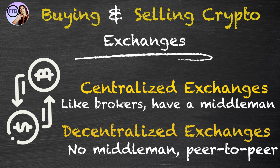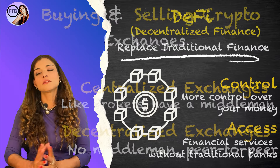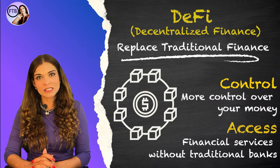To buy and sell crypto you can use an exchange, which is like an eBay for digital assets. There are centralized exchanges, which act like a broker, and decentralized exchanges, which operate without any middleman. Exchanges often charge a fee for transactions, so keep that in mind. Using an exchange is how you convert your traditional money, or fiat, into cryptocurrency and vice versa.